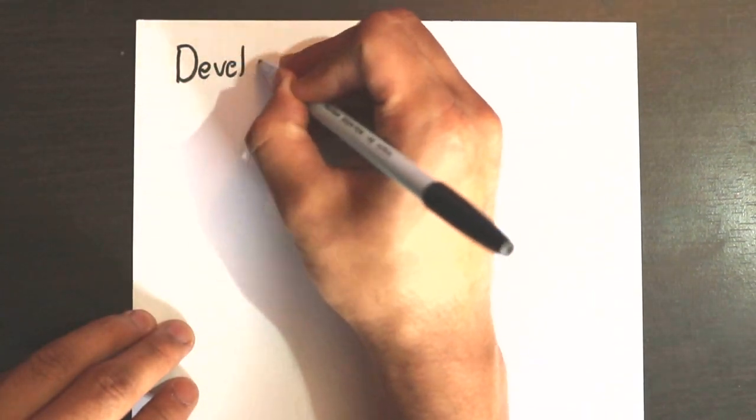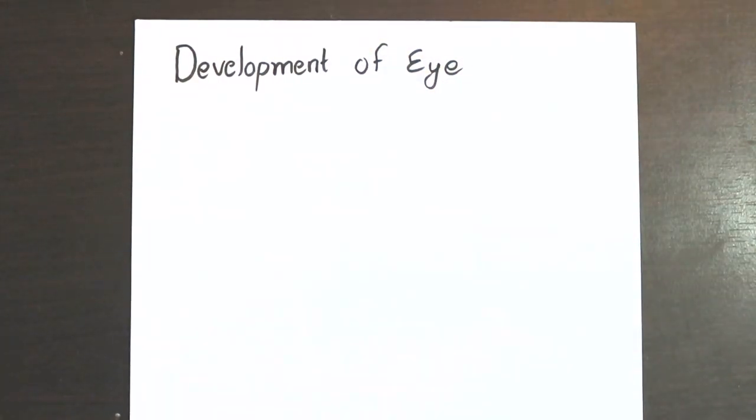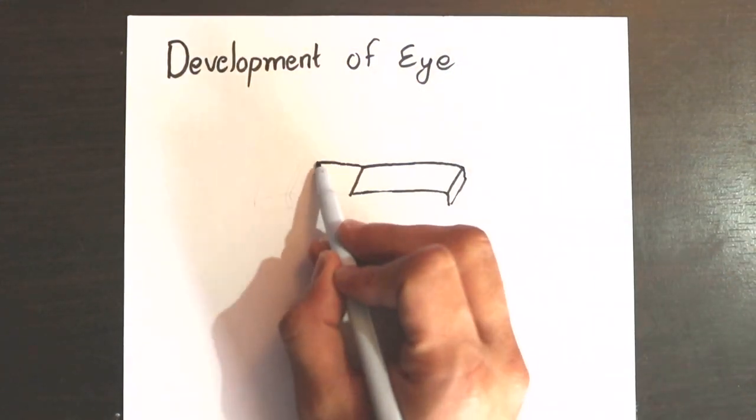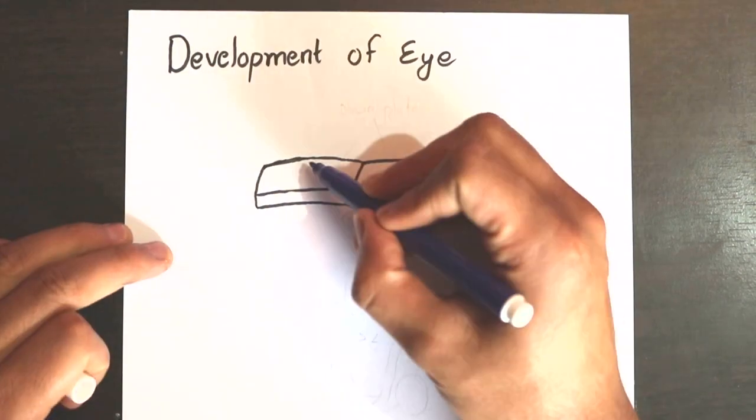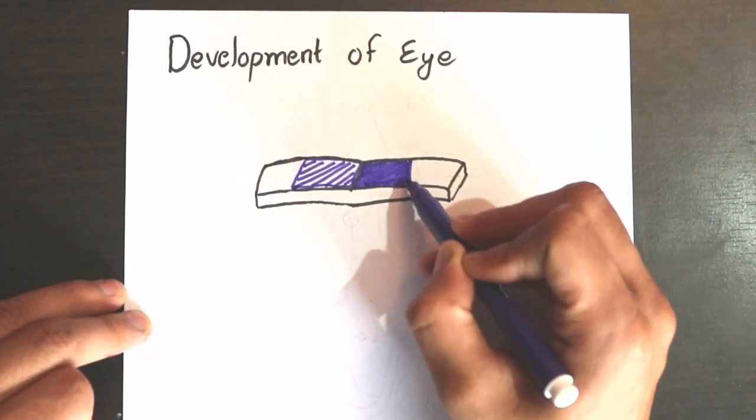In this video, we're going to learn about the development of the eye. In the third week of development, the notochord appears in the mesoderm.